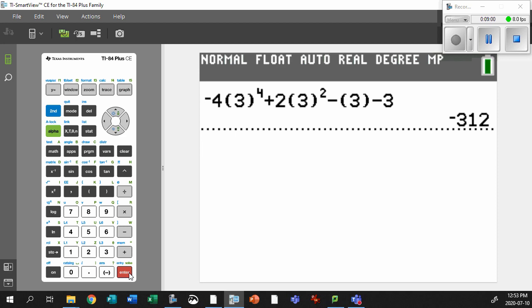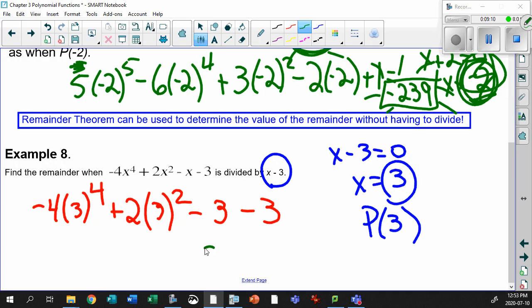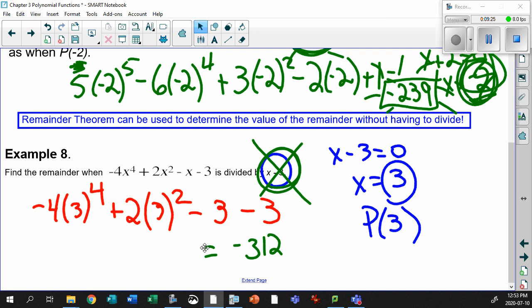Holy smokes, another huge remainder. So the remainder for this guy would be minus 312. So again, you can say right off the bat: since it does not divide in evenly, this is not a factor. That's what's going to be so cool about this. We're going to use this remainder theorem to help us factor these astronomically huge polynomials.